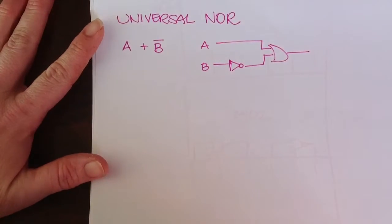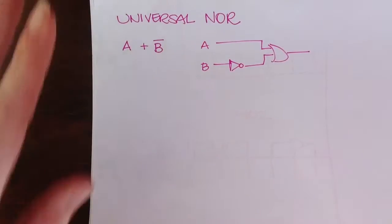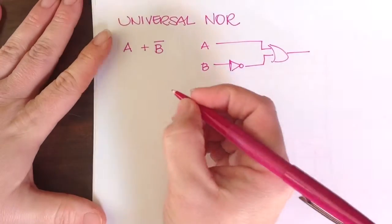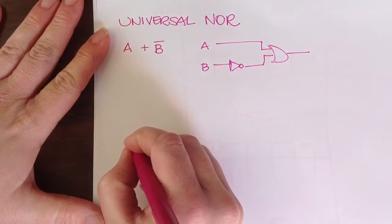Okay, so this, of course, would be the AOI expression. So if I go to redraw that in NOR-only equivalent to make NOT B,